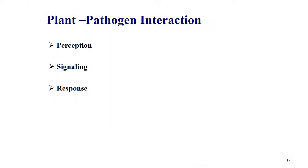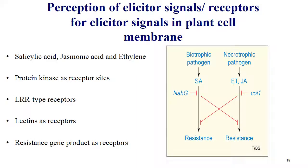The three kinds of host pathogen interactions are: perception, signaling and response. In perception, elicitor signals are received by receptors in the plant cell membrane. Salicylic acid, jasmonic acid and ethylene are active participators. Receptor types include protein kinase, LRR type receptors, lectins and resistant gene products as receptors. In the elicitor-receptor model, elicitors produced in pathogens send signals to receptors in the host. Biotrophic pathogens activate salicylic acid, and with the NAHG gene, resistant mechanisms can be found.